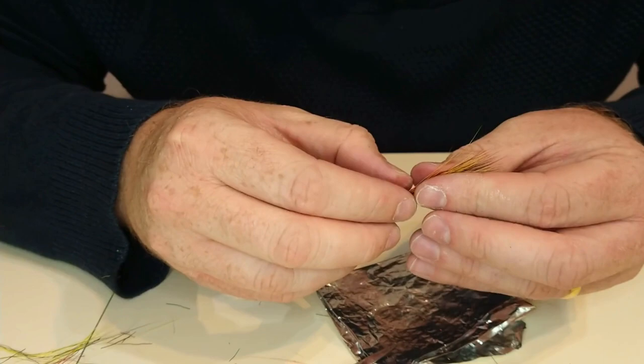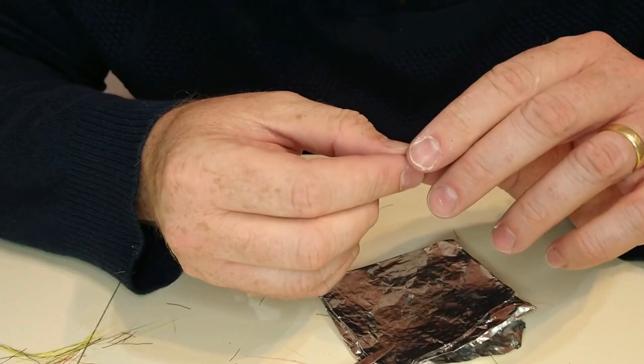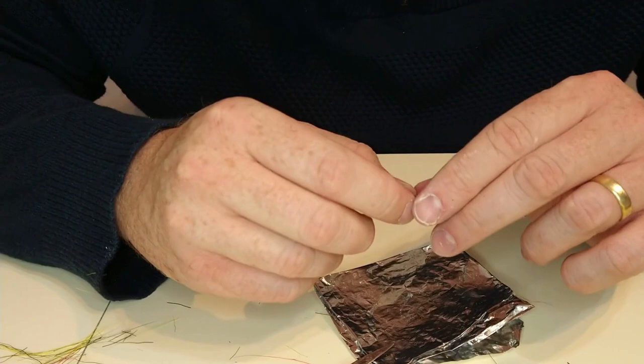And what you do is whenever you're ready, you just run your scissors into the section you want and just cut away. You just cut a section off, and then you've still got the rest all stuck together. You just put that aside and store it in a wee container, whatever you think of yourself.